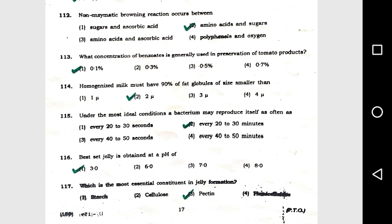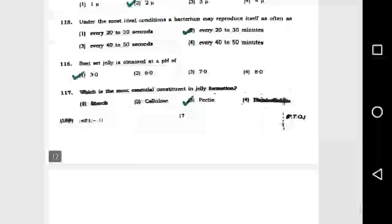Question number 114: Homogenization of milk must have 99 percent of fat globules of size smaller than option 2, 2 microns. Question number 115: Under the most ideal condition, a bacterium may reproduce itself as often as option 2, every 20 to 30 minutes.